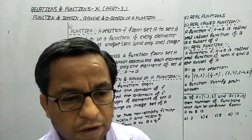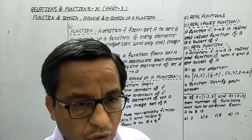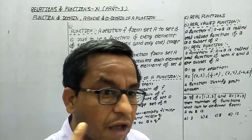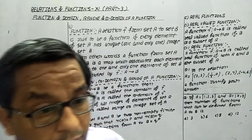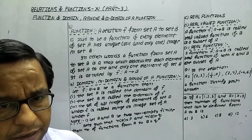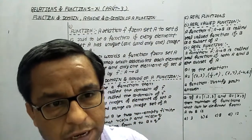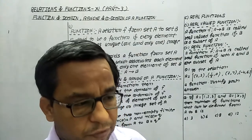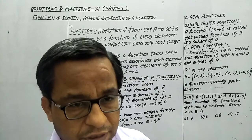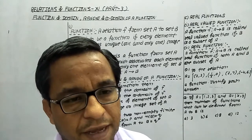Look at this. Function is a special type of relation in which every element of domain has its unique image in the other set. In other words, if I have two non-empty sets A and B and I have to form a function from A to B, then every element of set A has a unique image in set B. If this condition is satisfied, then it is a function, otherwise it is a relation.